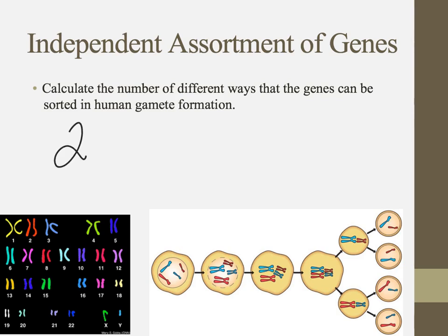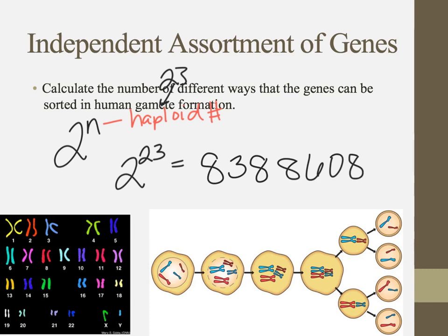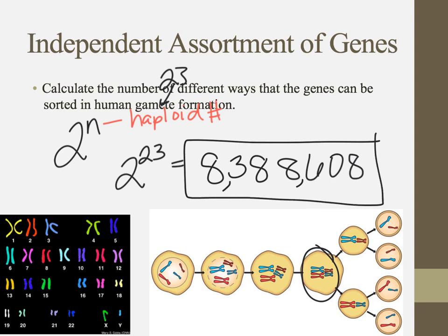This helps us calculate the number of different ways genes can be sorted, using the formula 2 to the nth power, where n is the haploid number. For humans, since we have 23 chromosomes in our haploid cells, we take 2 to the 23rd power. That calculation gives us over 8 million different gamete possibilities — and that doesn't even account for the different ways crossing over can occur in prophase I. This is just from the random alignment of chromosomes during metaphase.